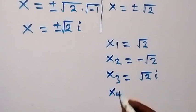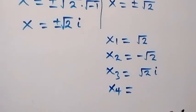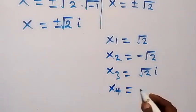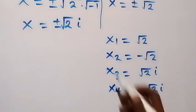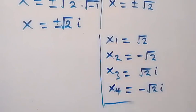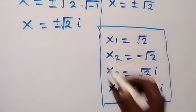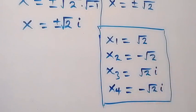Then x3 equals to root 2 i from here. Then the next which is x fourth solution x4, we can say it's minus root 2 i from here. And all together we have these four solutions to this given problem. Two real and two complex.